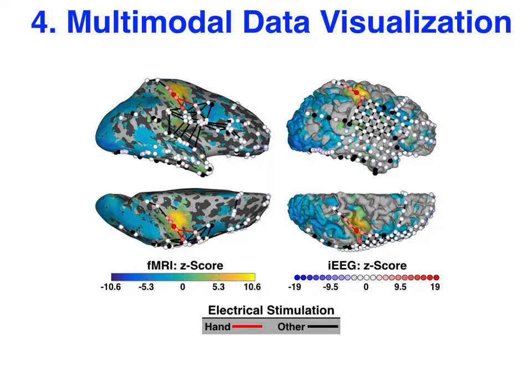The blue-red electrode color scale indicates intracranial EEG activity during a similar finger tapping task, with red indicating greater activity during finger tapping. Finally, the lines between electrodes represent the results of electrically stimulating pairs of electrodes. Red bars indicate that stimulating those electrodes produced a hand movement or sensation, and black lines indicate that stimulating those electrodes produced some other effect or no effect at all.